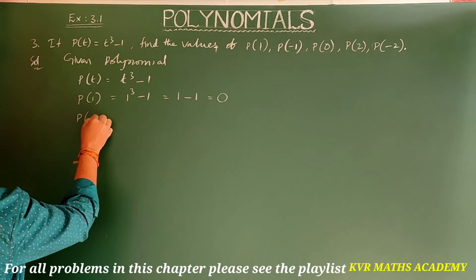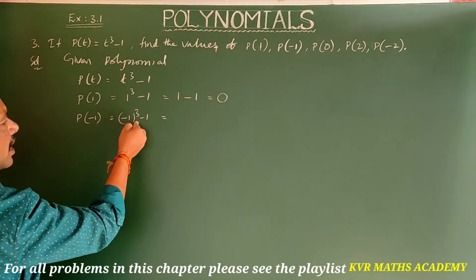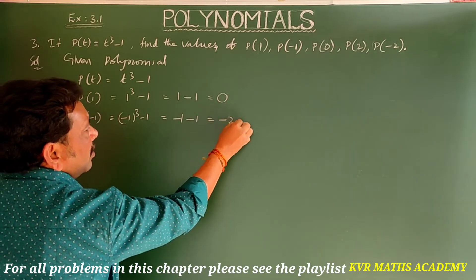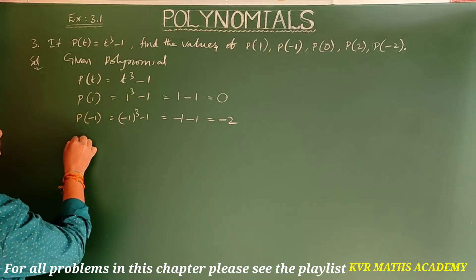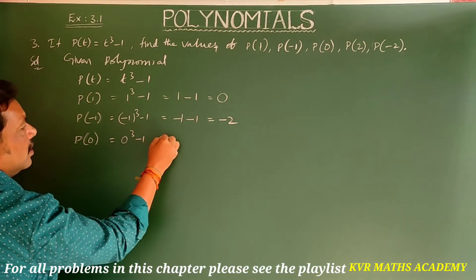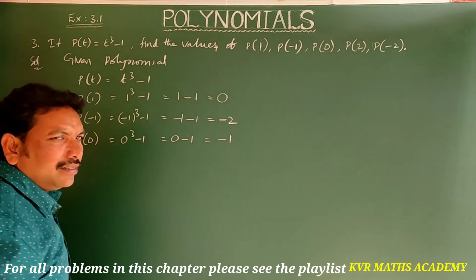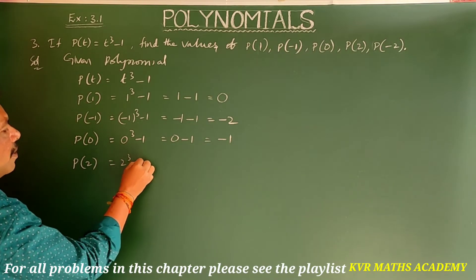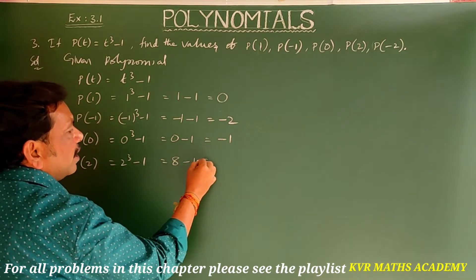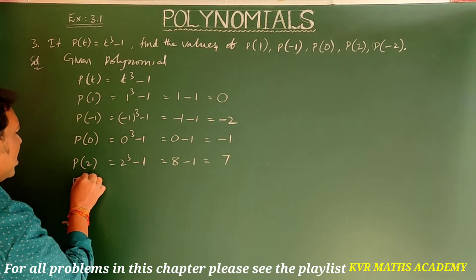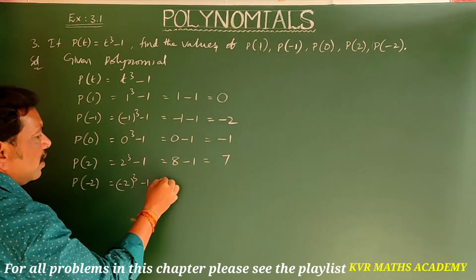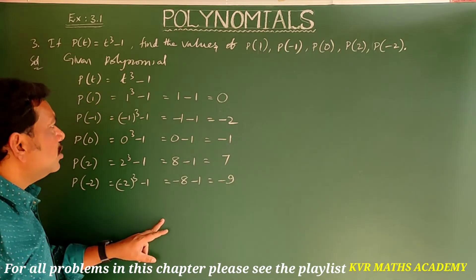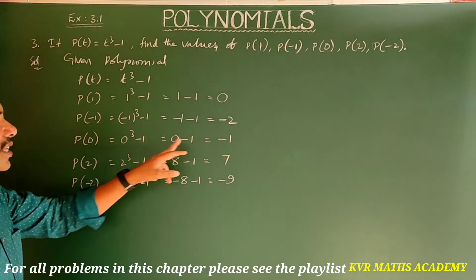Continuing: p(0) = 0³ - 1 = 0 - 1 = -1. p(2) = 2³ - 1 = 8 - 1 = 7. p(-2) = (-2)³ - 1 = -8 - 1 = -9. So the results are: p(1) = 0, p(-1) = -2, p(0) = -1, p(2) = 7, and p(-2) = -9.